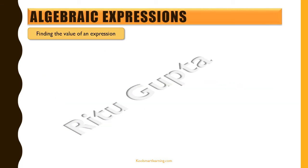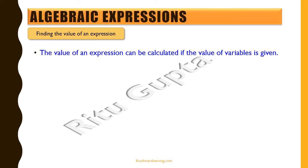Now, how do we find the value of an expression? An algebraic expression contains a variable that can take any value depending on the context of the mathematical problem. We can find the value of an expression only if the value of the variable is given to us, because that means we know the variable's value in that mathematical context — and that is where we can find out the value of the expression.